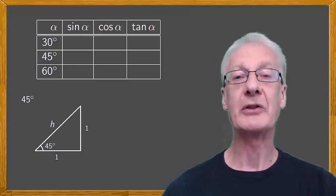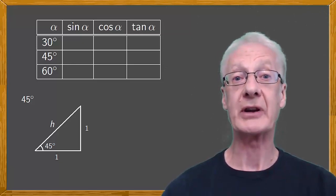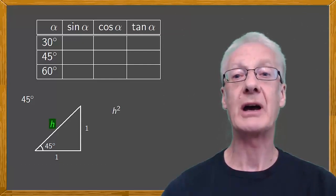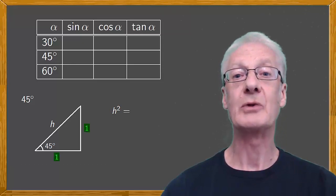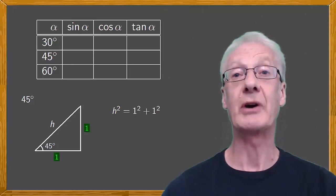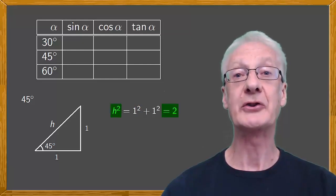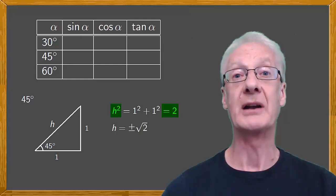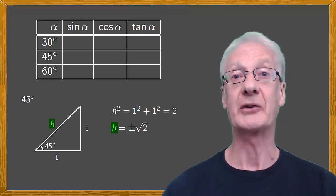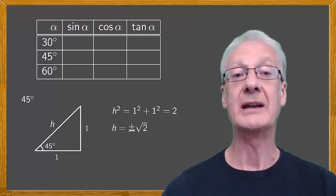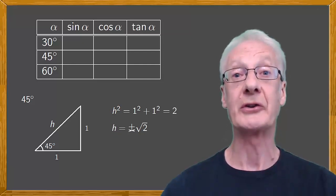Because we're dealing with a right triangle, we can use Pythagoras' theorem. The hypotenuse squared is equal to the sum of the squares of the other two sides, which in this case is 1 squared plus 1 squared, which equals 2. And if h squared is 2, then h must be plus or minus the square root of 2. But remember, h is a length, so it has to be positive. So we obtain that h is the square root of 2, and we'll show this on our triangle.